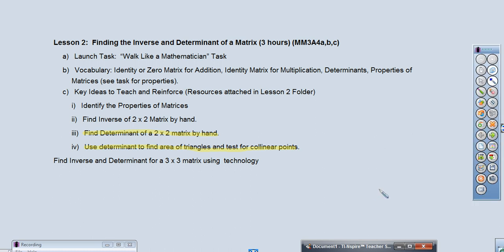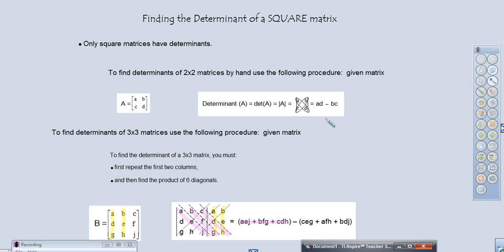So recall a 2x2. You take the product of the diagonals and you subtract those products, and that finds the determinant. Remember the determinant helped us determine whether or not a matrix had an inverse.